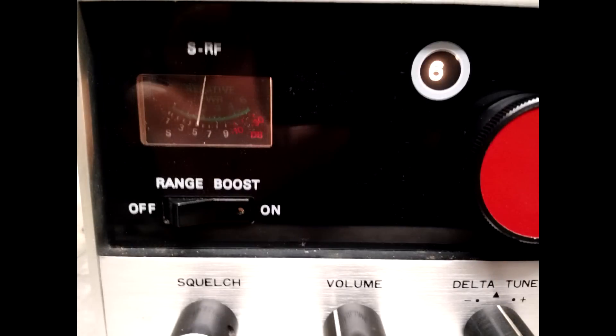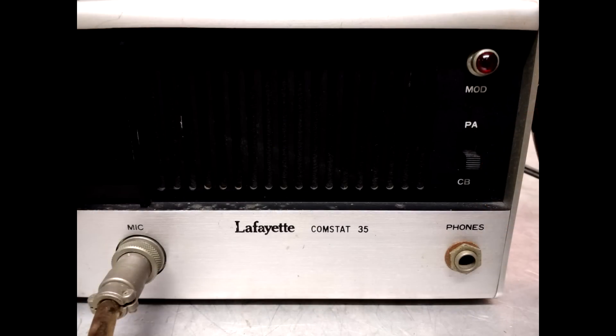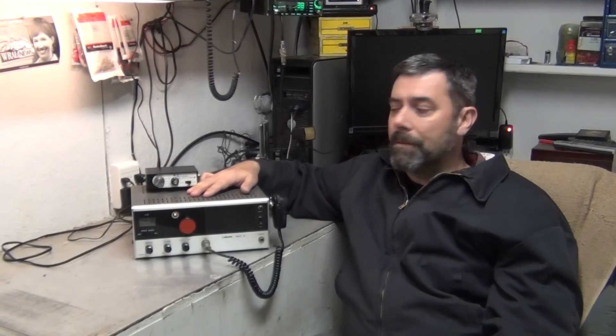It has a range boost button. And you'll see the little meter there. It is working. Now, originally, this is just a poor little 23 channel radio. But as you roll through the dials, you can see the channels moving up and down. Our buttons here, squelch, volume, and delta tune. On this radio, because it is a tube radio and it takes a little while for it to warm up, I have found that delta tune on this radio does actually make a difference, noticeable.